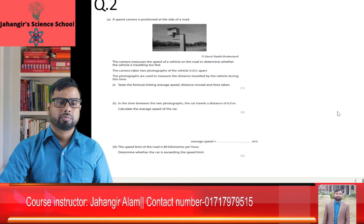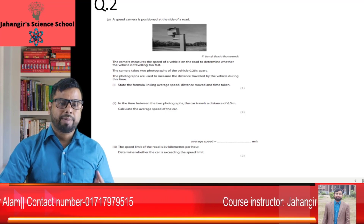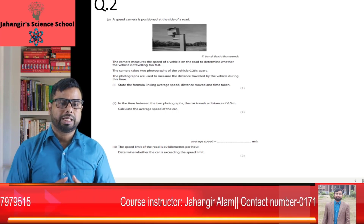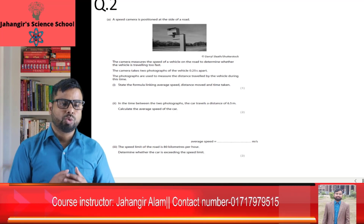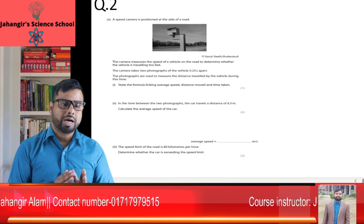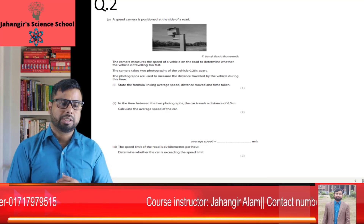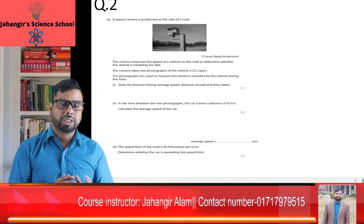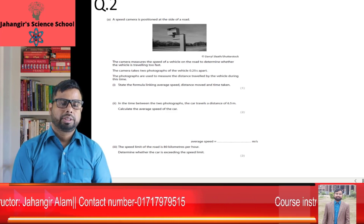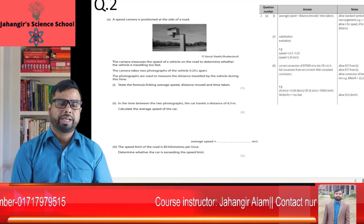Question number 2: A high-speed camera is positioned at the side of the road. The camera measures the speed of a vehicle to determine whether it is travelling too fast. The camera takes two photographs 0.25 seconds apart, and the photographs are used to measure the distance travelled during this time. State the formula linking average speed, distance moved, and time taken. Average speed equals distance moved divided by time taken.